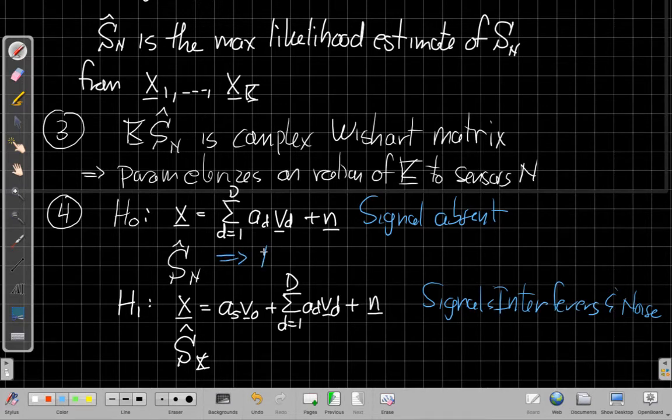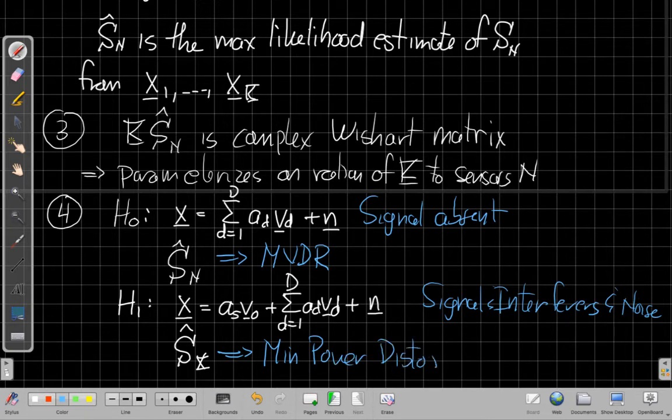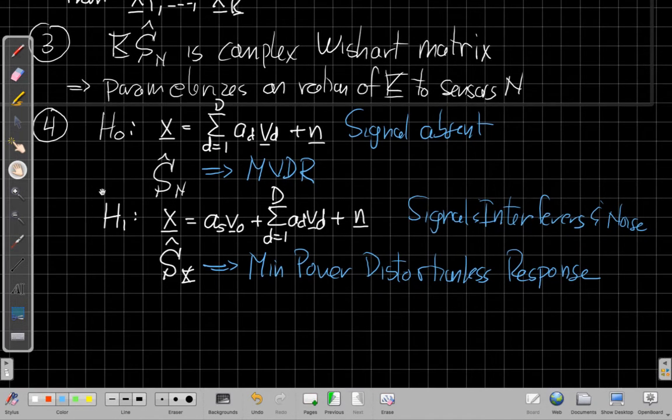When we do that Van Trees would make a distinction. He often calls this S of X to remind us the signal is present too. So we have signal plus interferers in this case, interferers and noise. Depending on the problem we're working on we may not have a choice. We may only get data that had, we may not be able to avoid this or get signal absent noise only data. Van Trees has his own notation, he's kind of picky. He calls this version the MVDR because this was Capon's original assumption, and Van Trees calls this version the minimum power distortionless response or MPDR.